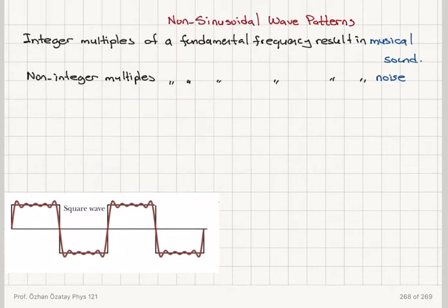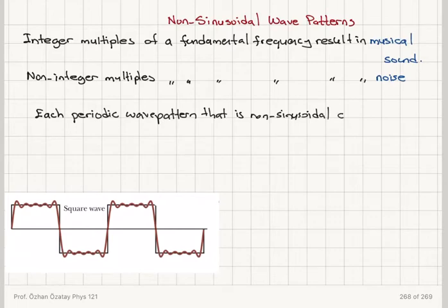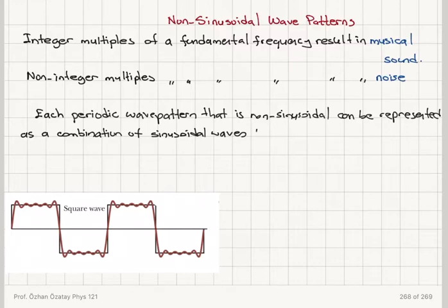Now there is a very famous theorem by Fourier which states that each periodic wave pattern—the only requirement is that it's periodic—that is non-sinusoidal, can be represented as a combination of sinusoidal waves, and these sinusoidal waves form a harmonic series.